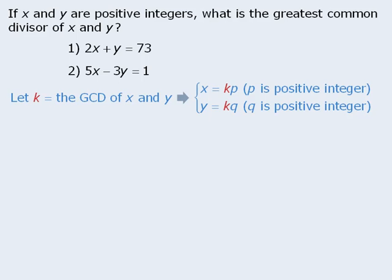Now let's examine our statements. Statement 1 tells us that 2x plus y equals 73. Since we can write x and y in terms of k, let's replace x and y with their equivalent values. From here we can factor out a k from the left-hand side to see that k times (2p plus q) is equal to 73.